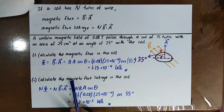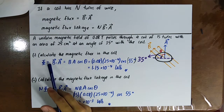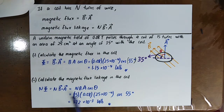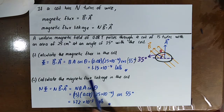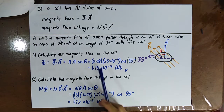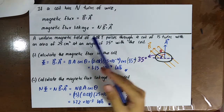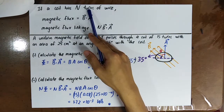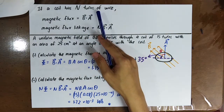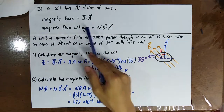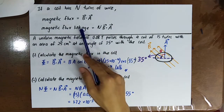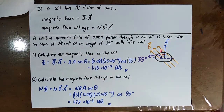Now calculate the magnetic flux linkage in the coil. Magnetic flux linkage equals N times B dot A. The higher the number of turns, the larger the magnetic flux linkage.